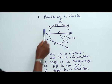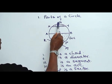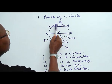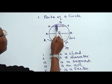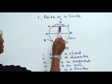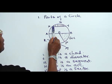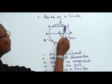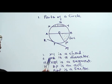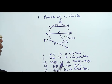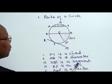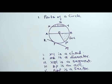Then we have SQY. This region that is shaded with hash lines — this region here — is a segment. SQY is a segment. It is a region of a circle.